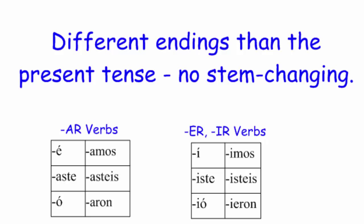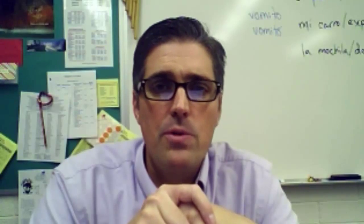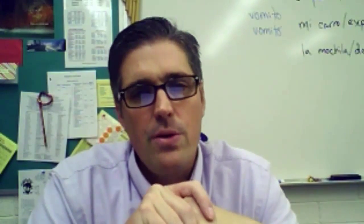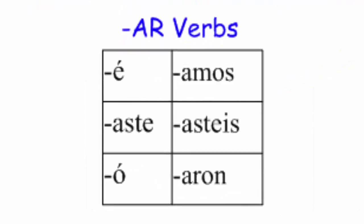It's similar to conjugating present tense verbs, where you take your infinitive, drop your AR, ER, or IR ending, then add a new ending. For example, hablar is an AR verb. There's no stem changing in the preterite — generally speaking, we've got some irregular verbs where the stem changes slightly, but we'll deal with those later. So for AR verbs like hablar, we drop that AR and add these endings.